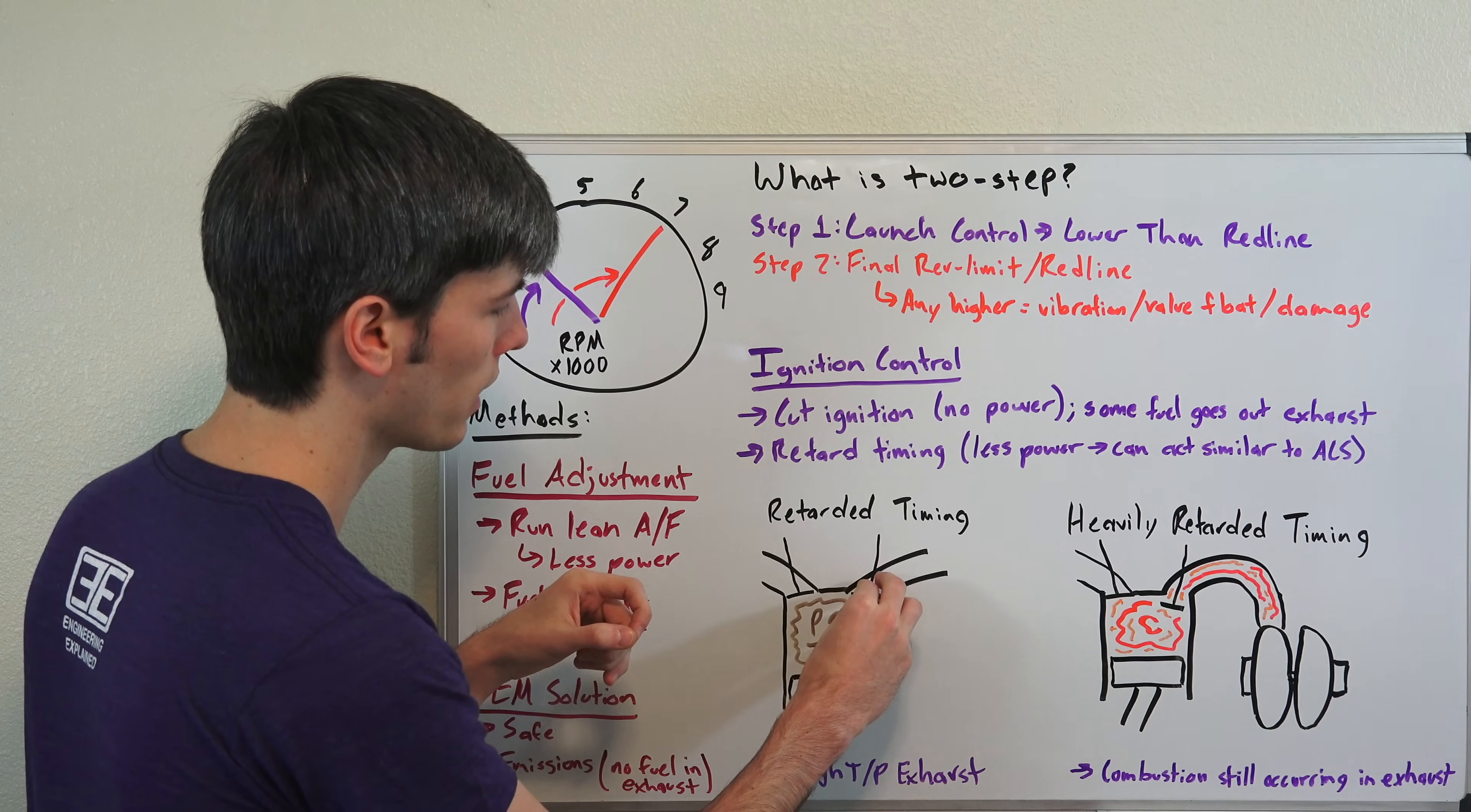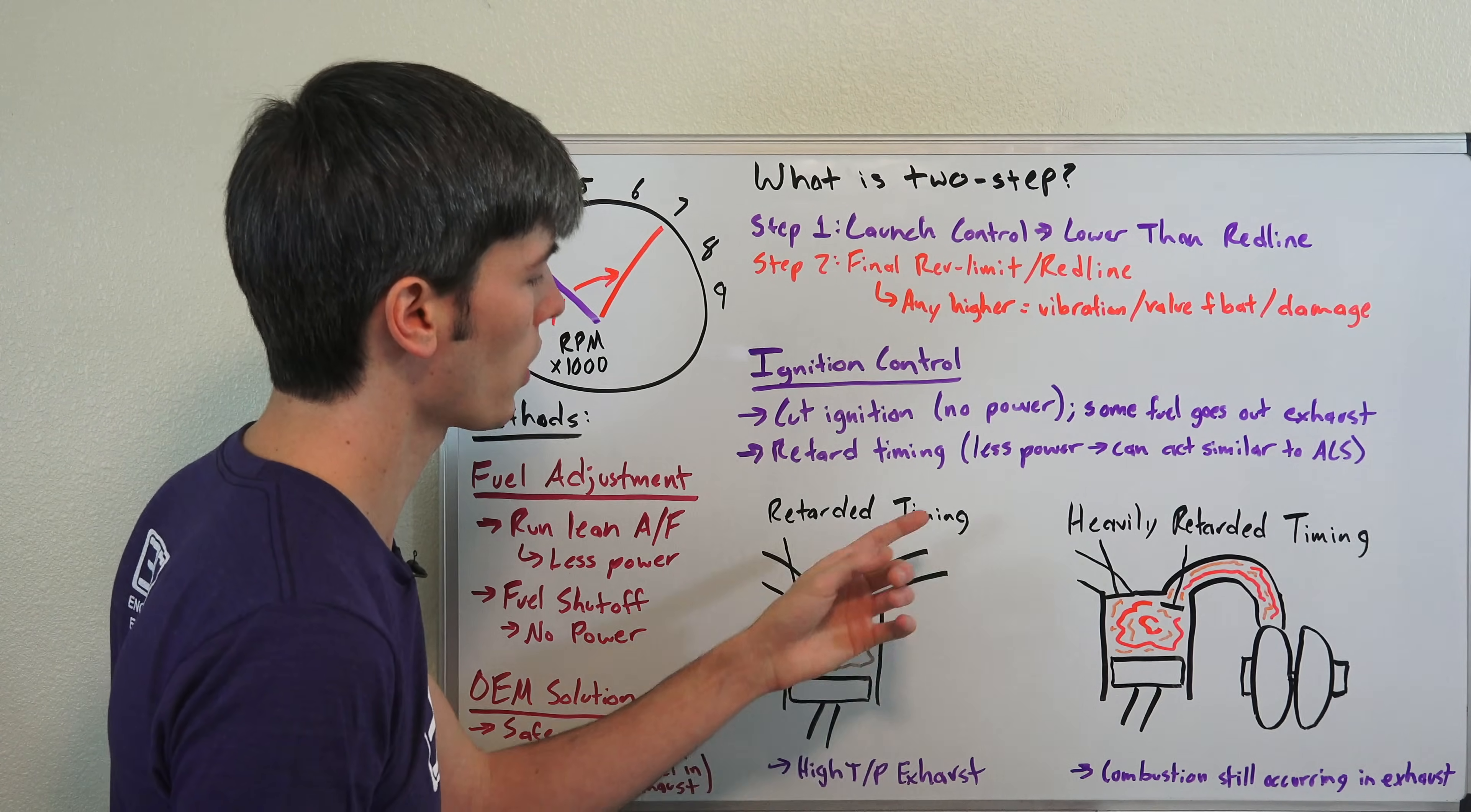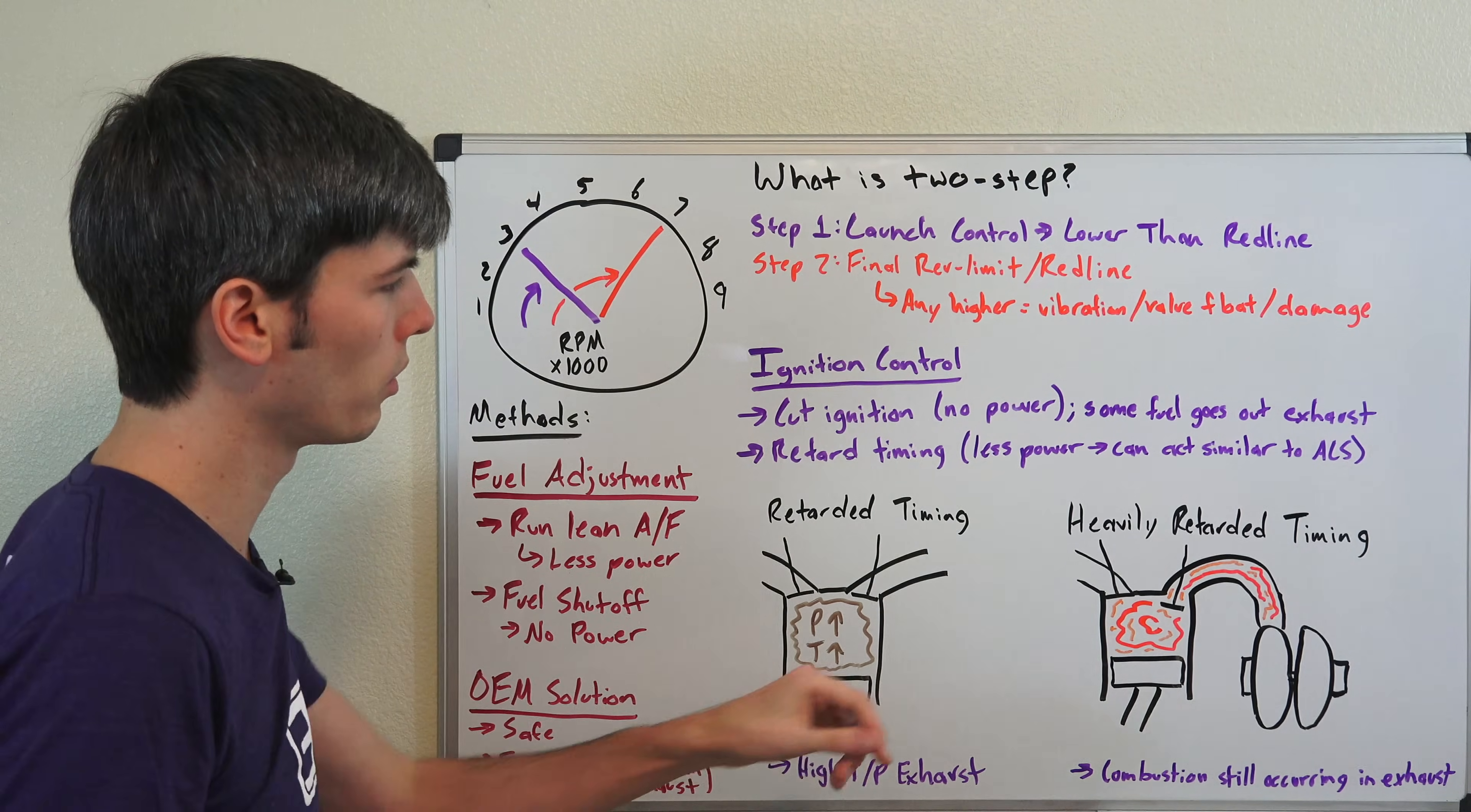And so when you open your exhaust, you're going to have this high pressure and high temperature gas that's going to move out, and if you do have a turbocharged vehicle, then that high pressure and high temperature gas is going to spool up that turbo, and keep it spooled up, and can act as an anti-lag system while you're sitting there keeping your engine at that rev limiter before you launch.